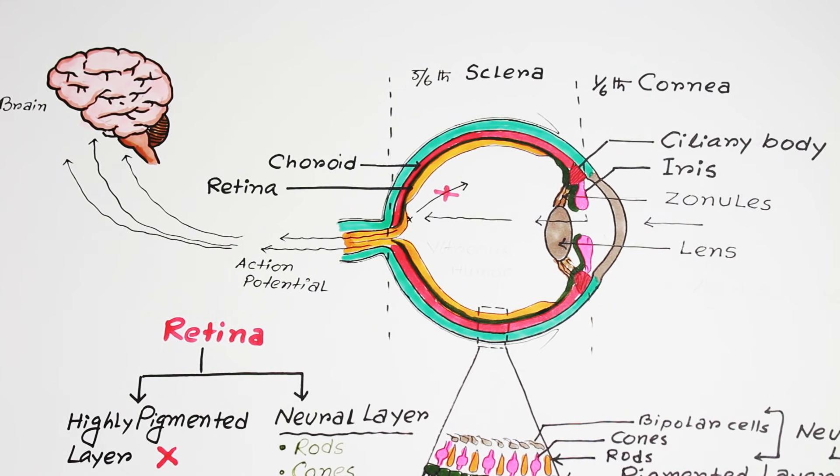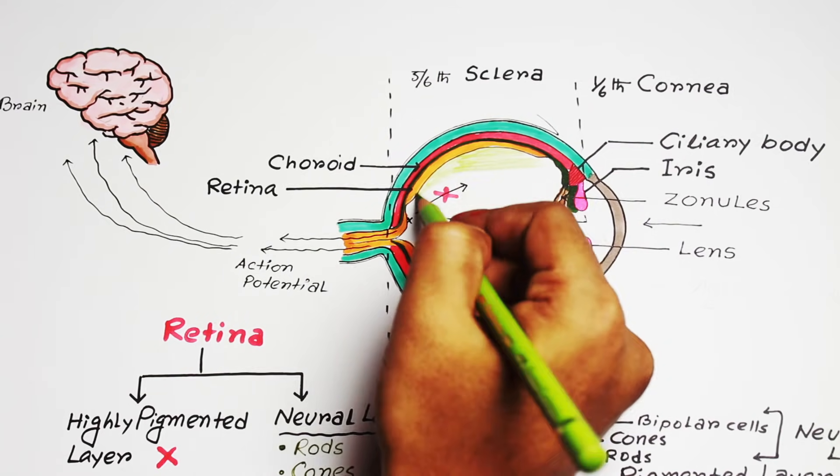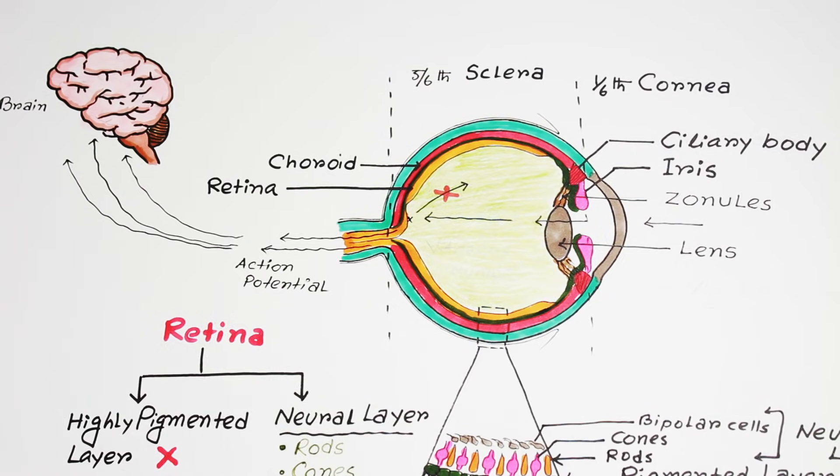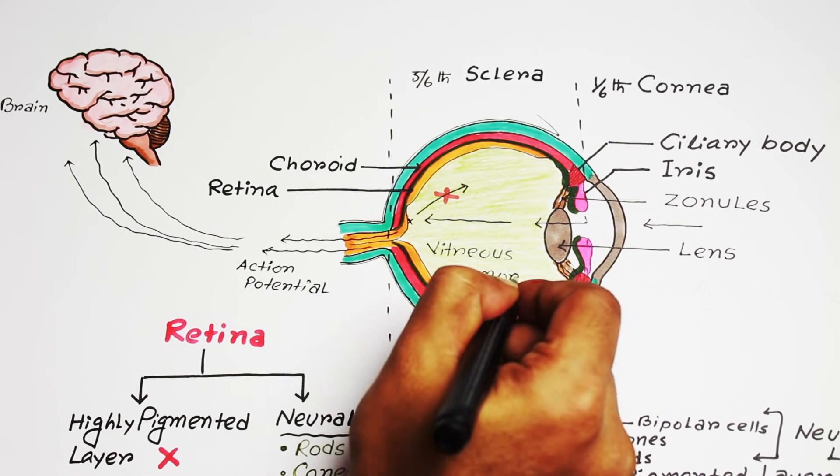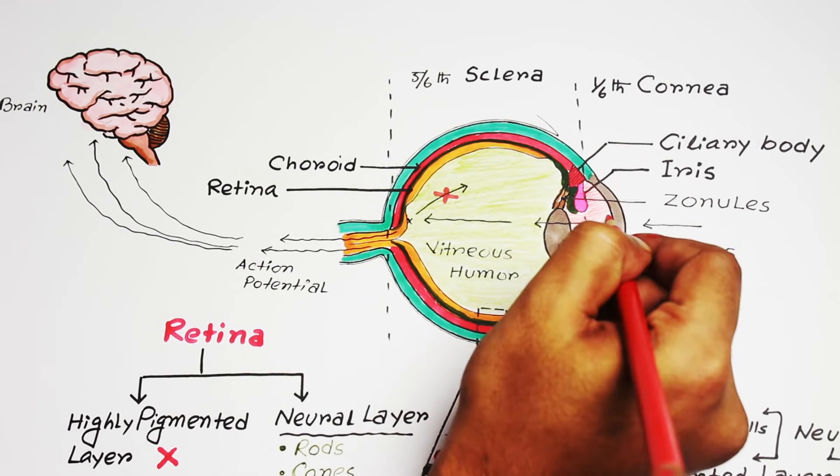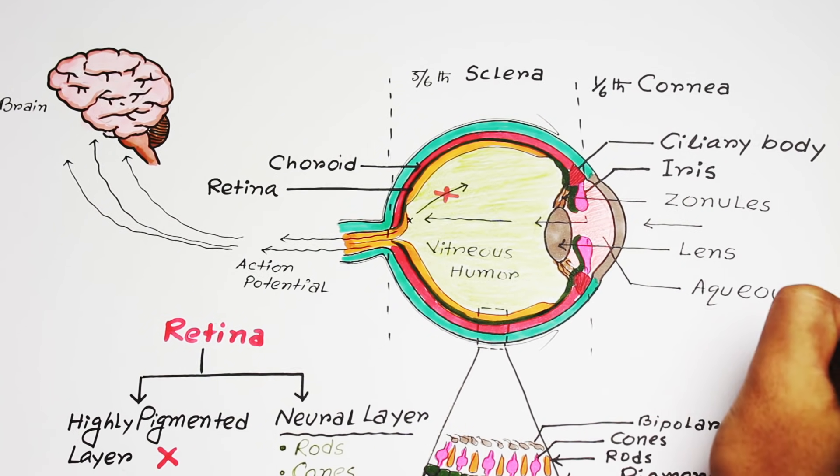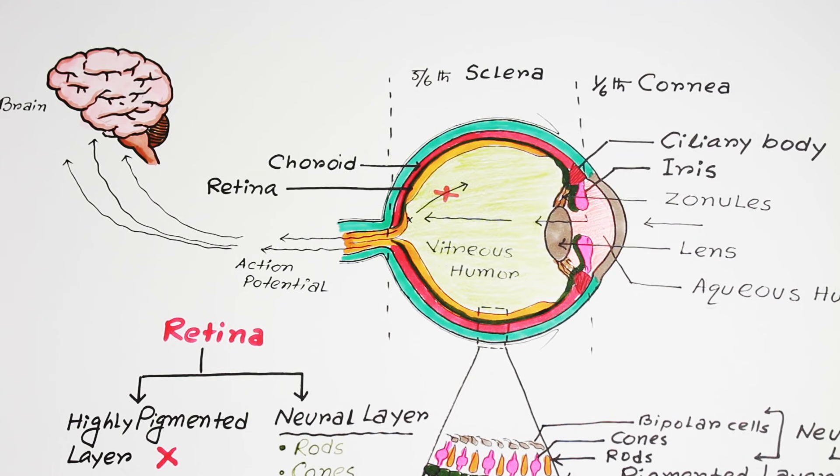Now, behind this lens and zonules, the cavity of the eyeball is filled with a jelly-like material which is called vitreous humor. And the fluid which fills the anterior compartment just anterior to the lens is called aqueous humor.